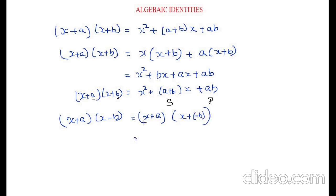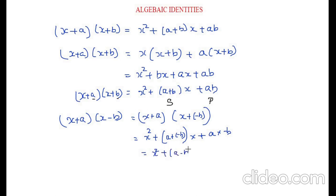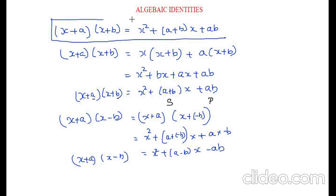Let me substitute and explain. It is x², then a + (−b), so the middle term becomes (a − b)x. For the last term, a times (−b) gives −ab. So the formula for (x + a)(x − b) would be x² + (a − b)x − ab. Instead of remembering this separately, you can just use the first formula and substitute the negative terms as negative values.